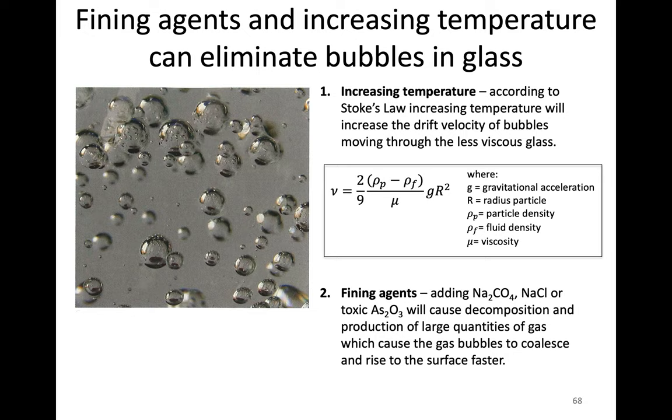What that does is creates a large quantity of gas. When a large quantity of gas forms, they form larger and larger bubbles because all the small bubbles coalesce into one. That also allows it to move faster because we increase the radius of the particle. This is the other chemical route in which we can eliminate bubbles by forming more bubbles—it sounds contradictory, but that's one way we can remove bubbles from being trapped in glass.